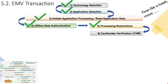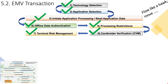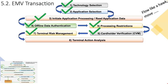Once we've verified that the person standing there holding the card is actually Bob, the terminal now has sufficient information to start its Terminal Risk Management process. In this step it's trying to establish how the transaction should proceed — should we decline it offline, should we go online to ask the issuer host for further input, or should we just approve it offline?